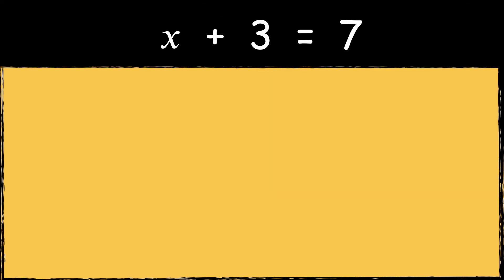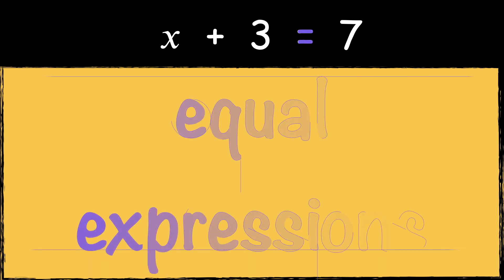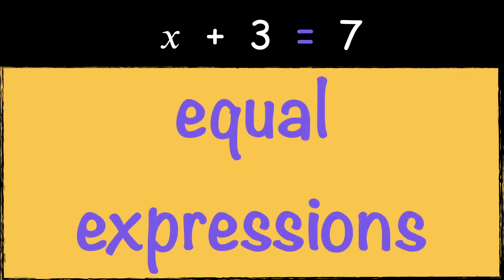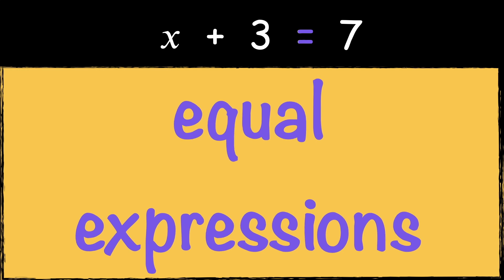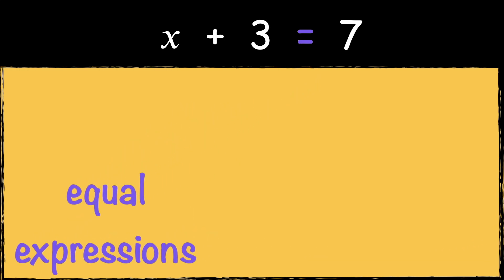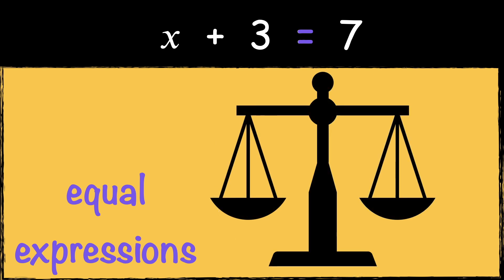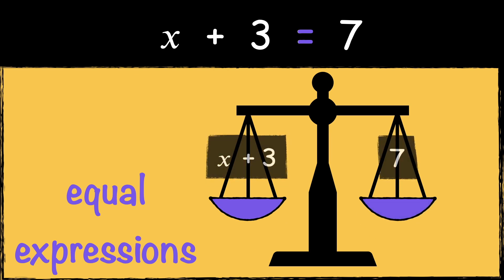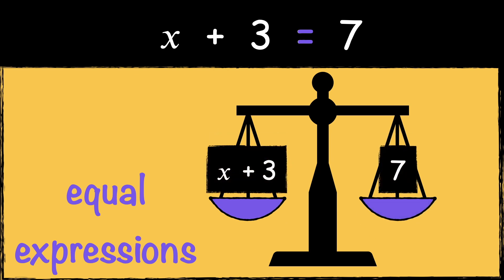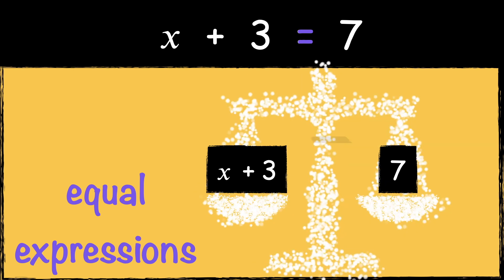Let's break down the components of an equation. First, let's have a look at how an equation is made up of two equal expressions. An equation is like a balanced scale. Just as a scale has a left and a right side, so does an equation. Each side must be balanced, which means they must be equal. The left and right sides are separated by an equal sign.